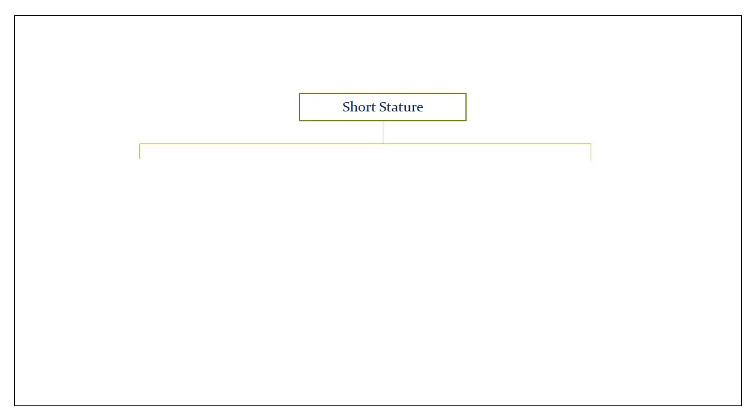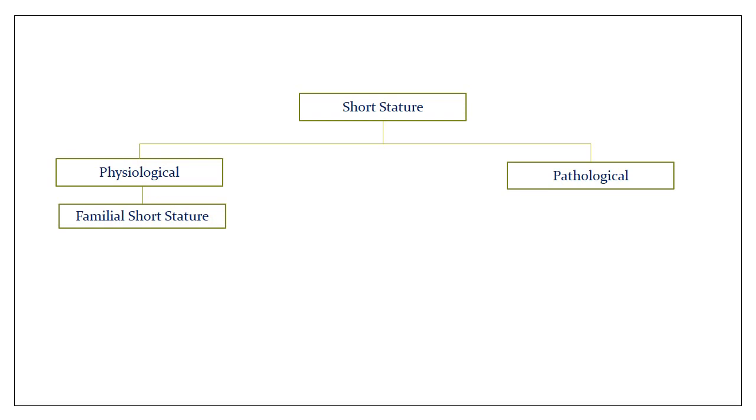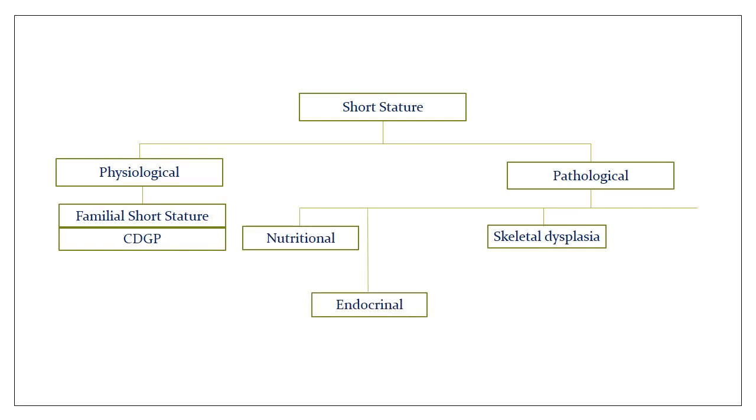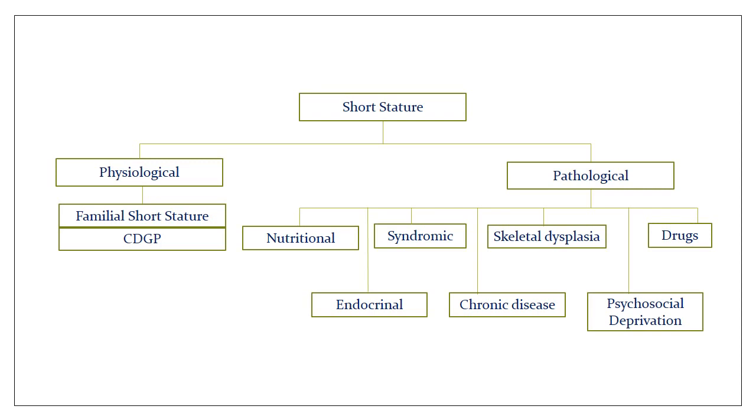So you need to look at short stature under two headings: physiological and pathological. In physiological stature, the entity is familial short stature, which is reduced genetic potential. There's another entity known as constitutional delay in growth and puberty, which basically signifies that the pubertal spurt is delayed. The pathological entities are numerous: skeletal dysplasia which produce disproportionate short stature, nutritional causes, endocrine causes such as hypothyroidism, growth hormone deficiency, Cushing syndrome, syndromes such as Down syndrome and Turner syndrome, chronic diseases like chronic liver disease and chronic kidney disease, prolonged steroids, and finally psychosocial deprivation.